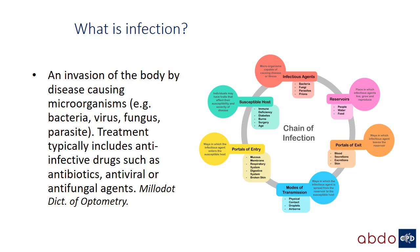The chain of infection involves a reservoir — which could be animals, people, a water supply or food — from which infectious organisms are released, for example in blood, secretions, excretions, or simply on the skin. Transmission can be airborne or through direct physical contact. We must also consider how infective organisms enter the body to cause disease, and what makes the patient susceptible to that disease in the first place.